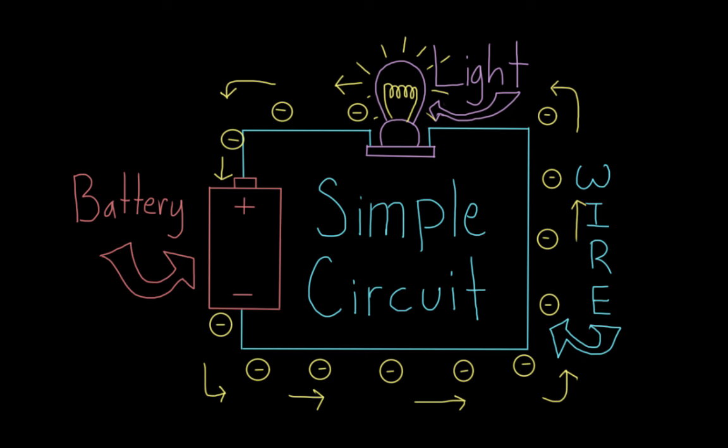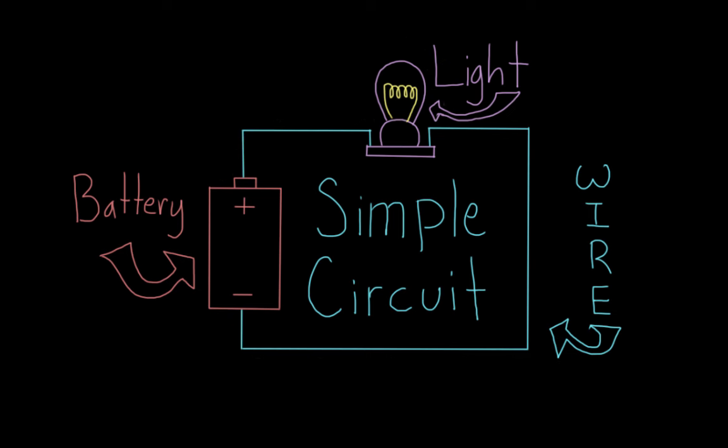Another thing you need to know about this circuit is that it only works if it is closed. If there is a break anywhere in the circuit, like if a wire was broken or not connected to the battery, the circuit wouldn't be complete and the light would no longer light up.